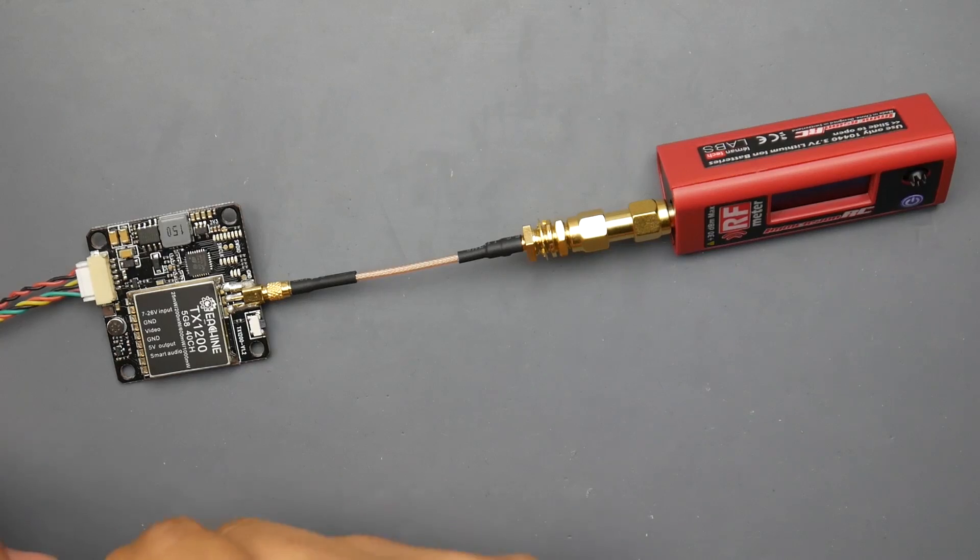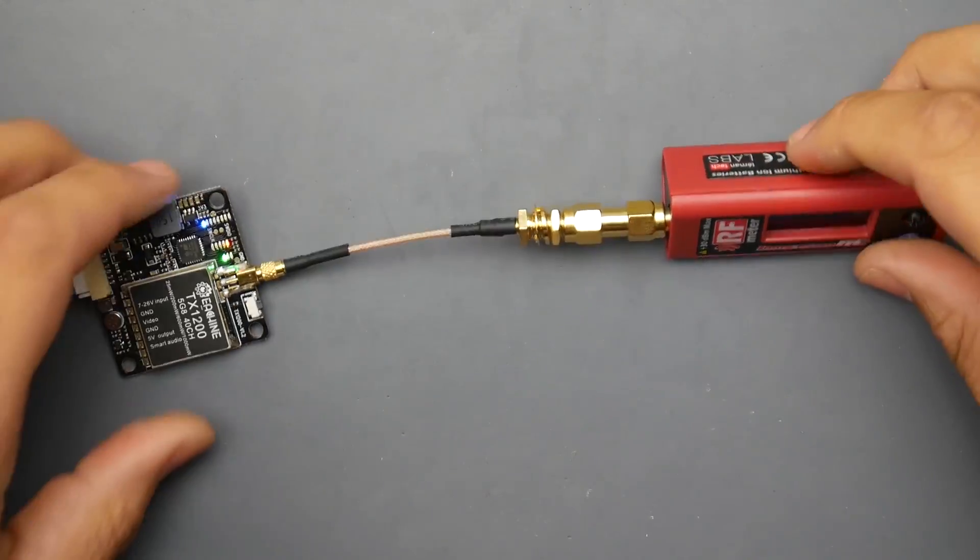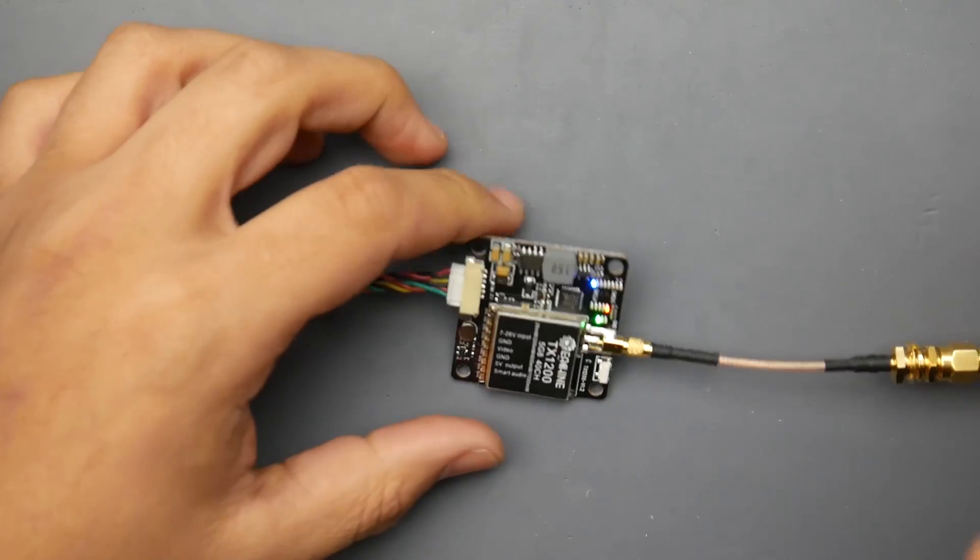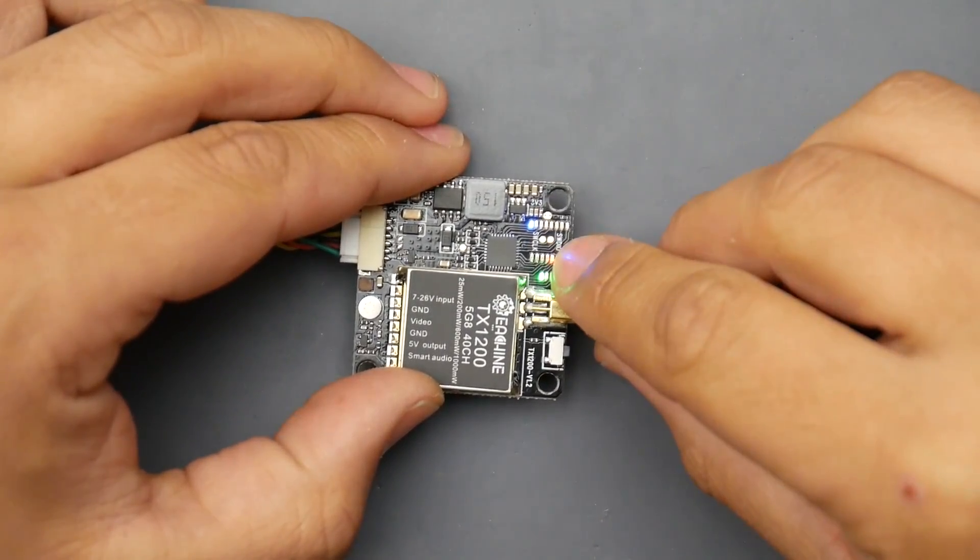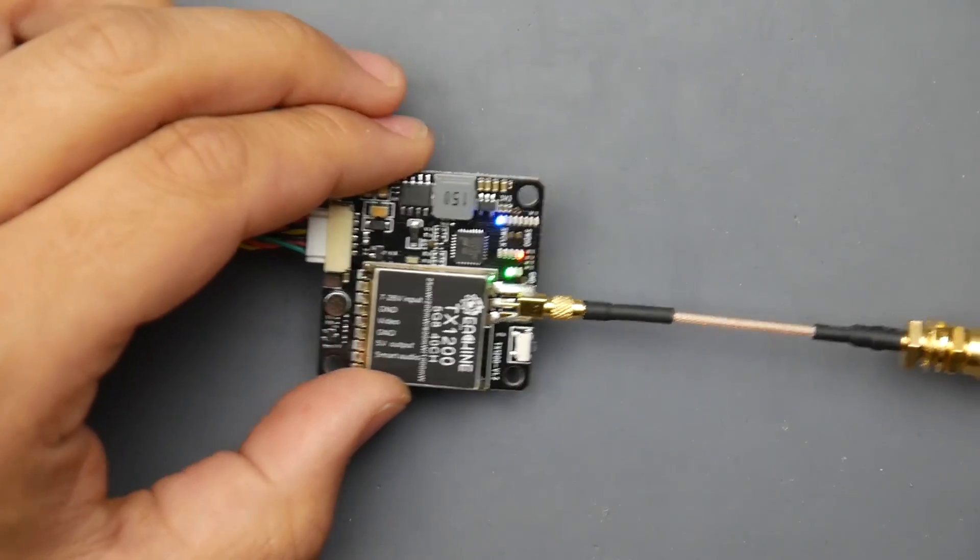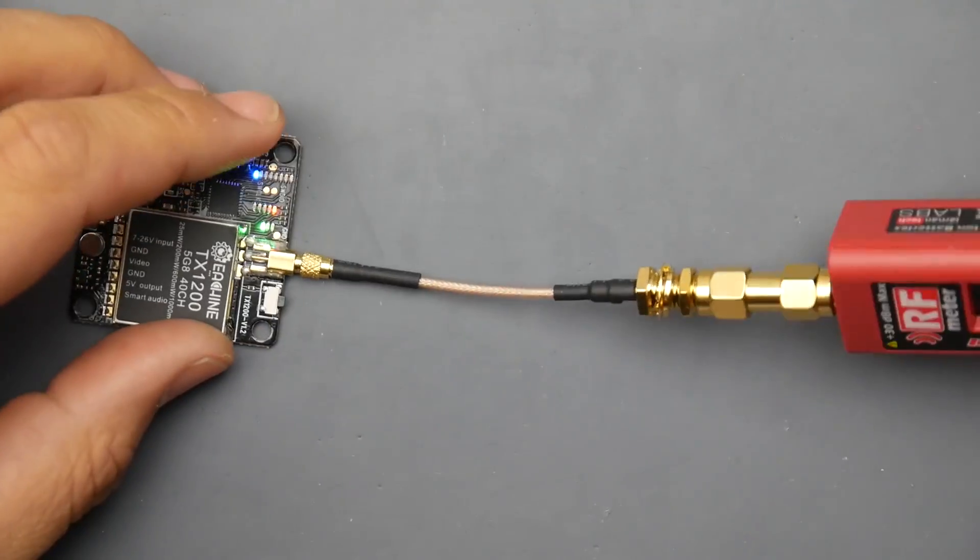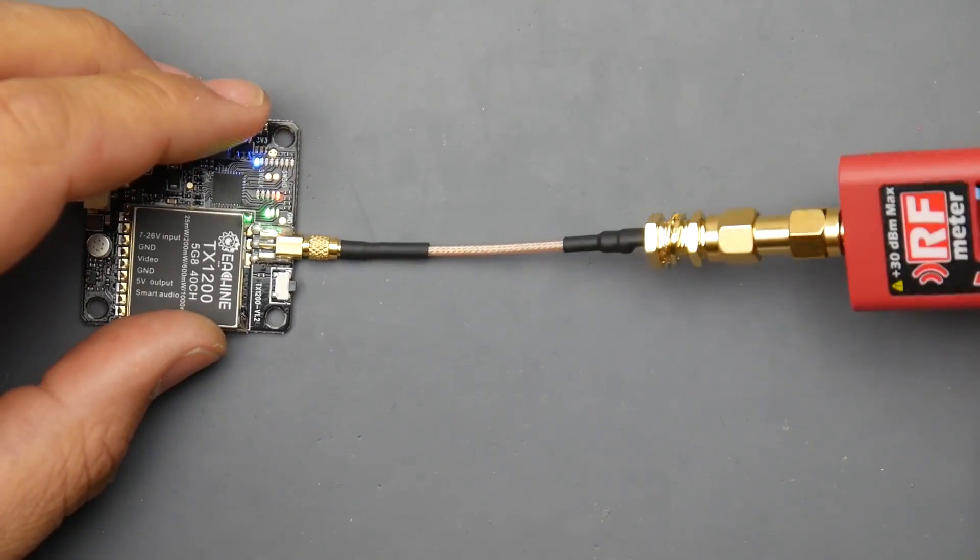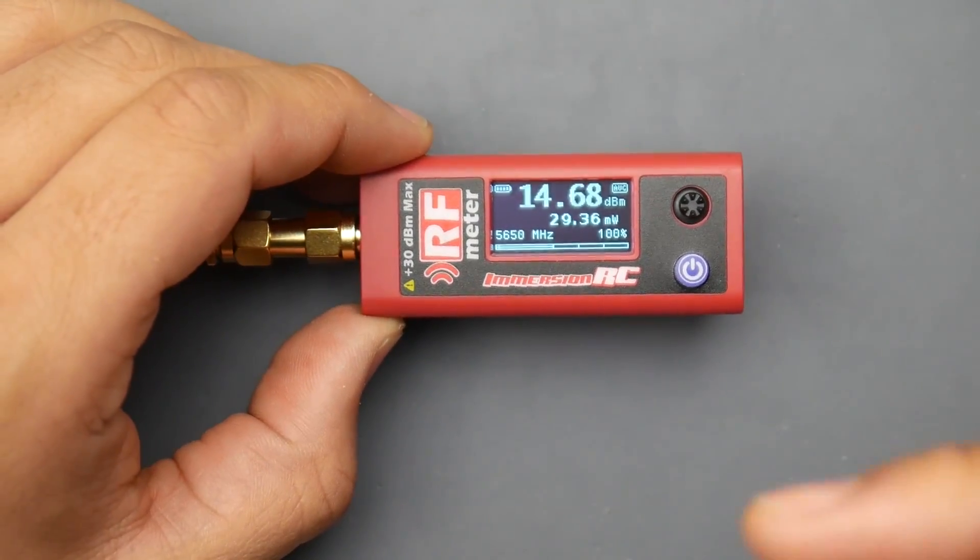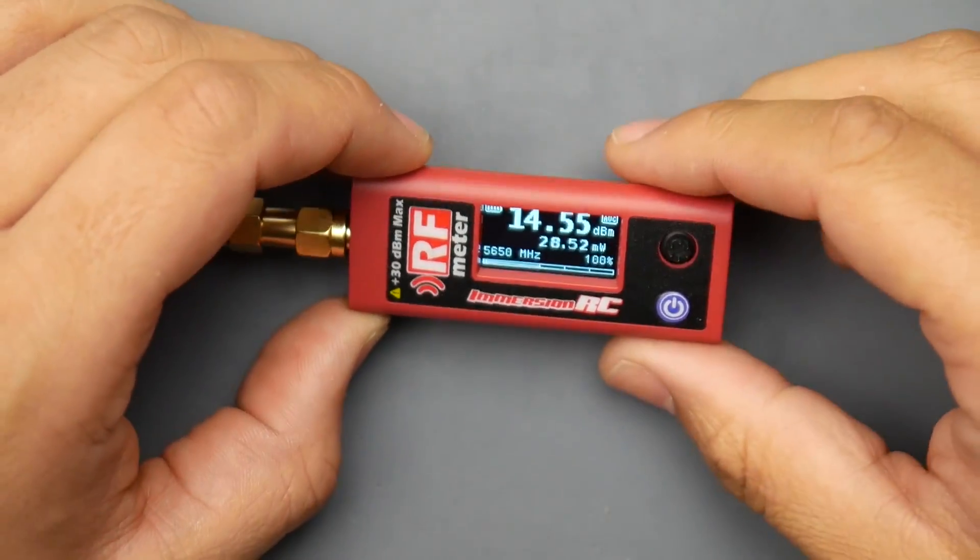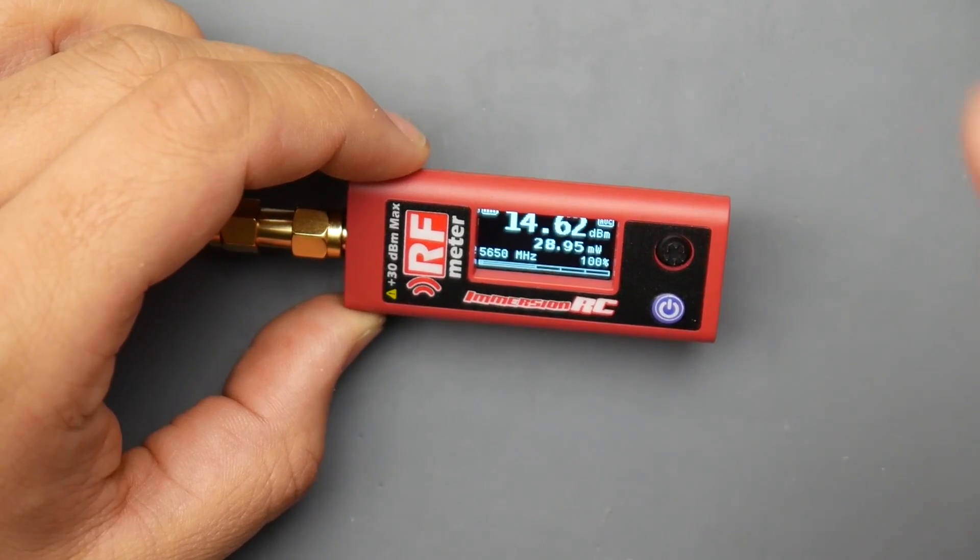All right, so there we go, it's connected. Currently it's broadcasting at 25 milliwatts. If we take a closer look here, it's at 25 milliwatts R band, and then channel 1 on the R band, which is the 5658. This is already set up to measure that. So currently it's set to 25 milliwatts on the VTX, and we're getting close to 30 milliwatts here.